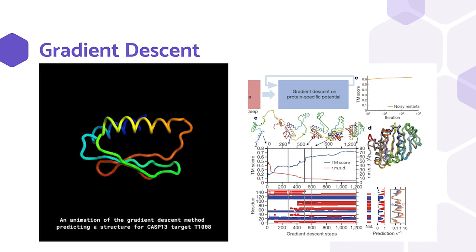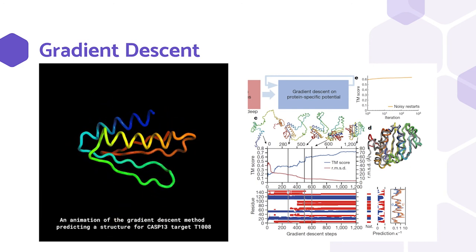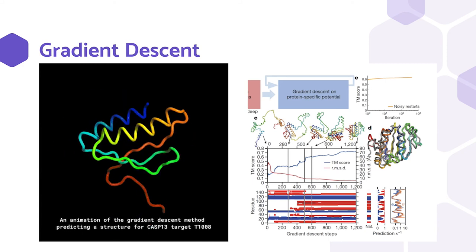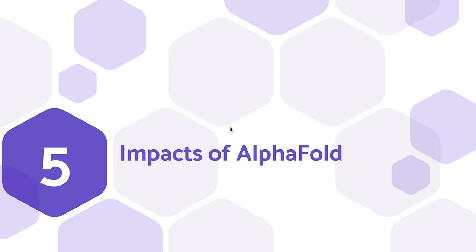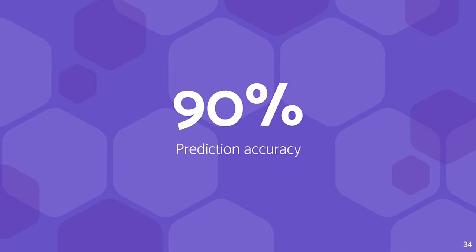Now that we understand an overview of the AlphaFold algorithm, let's talk about the results and why they were so revolutionary. By training the model and conducting the gradient descent, AlphaFold was able to achieve 90% accuracy in predicting proteins. That's pretty incredible.